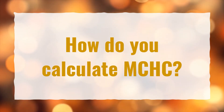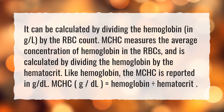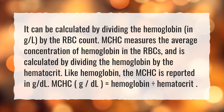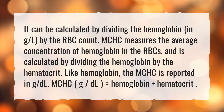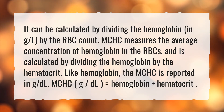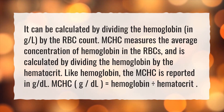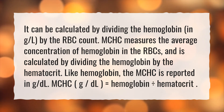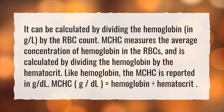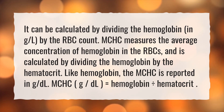How do you calculate MCHC? It can be calculated by dividing the hemoglobin, in grams per liter, by the RBC count. MCHC measures the average concentration of hemoglobin in the RBCs, and is calculated by dividing the hemoglobin by the hematocrit. Like hemoglobin, the MCHC is reported in grams per deciliter. MCHC (g/dL) equals hemoglobin divided by hematocrit.